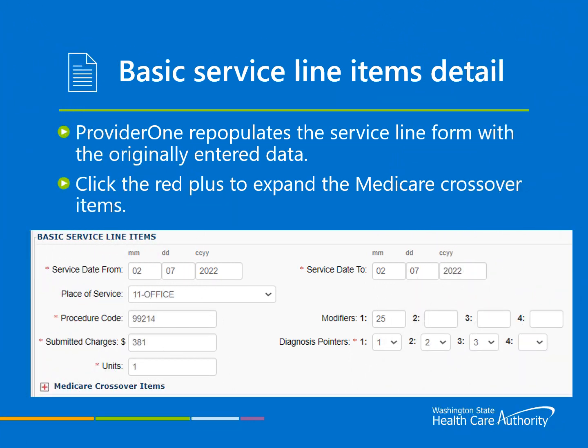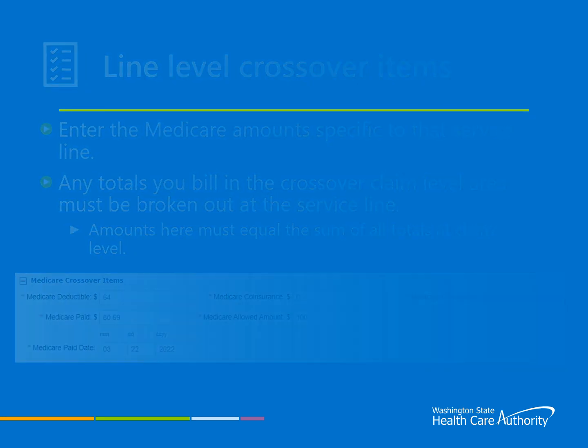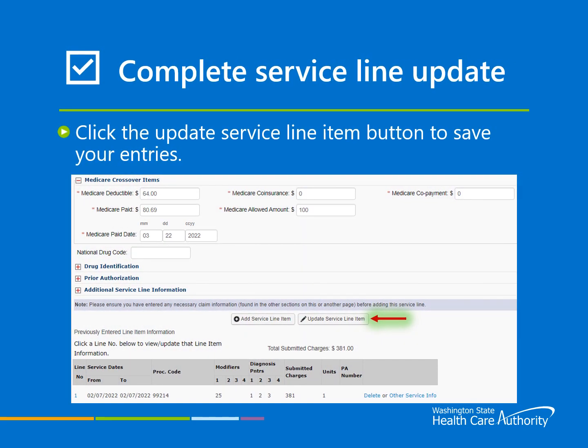Now it is time to add your Medicare information to the line level. Provider One should have repopulated the basic service line item data from the line number that you have chosen. Click the red plus expander titled Medicare Crossover Items. Enter any amount from the Medicare EOB for that specific service, completing every field marked with a red asterisk. Once your entries are complete, you must click the Update Service Line Item button. That will save the new information added to your service line. Be sure to complete these same steps for each service line on the claim.